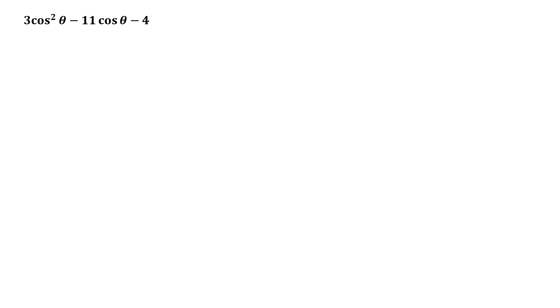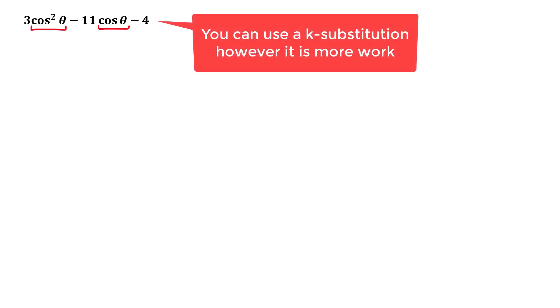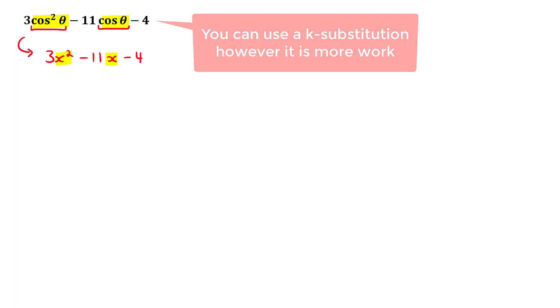In the first example we have 3cos²θ - 11cosθ - 4, and we have to factorize this. In this question we treat cosθ as if it were x — so you can imagine it as 3x² - 11x - 4. The cosθ and x behave in the same way.